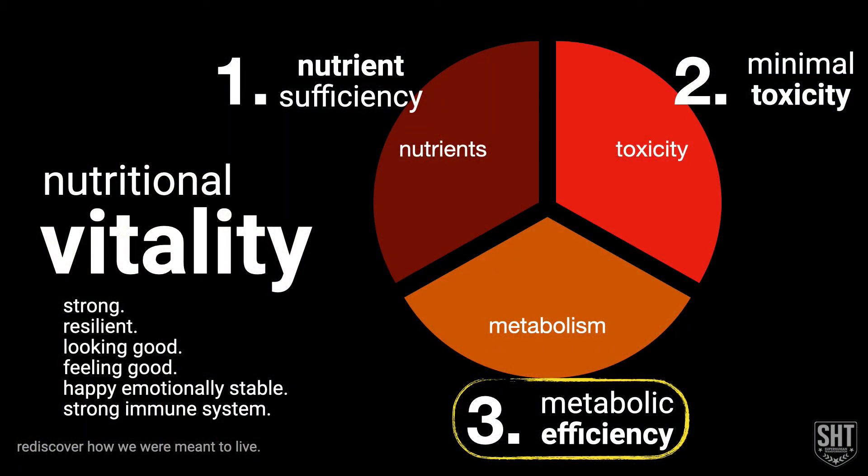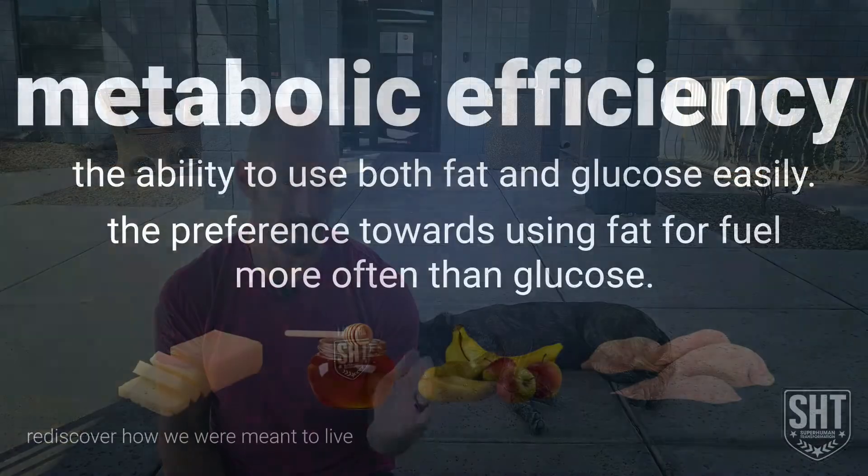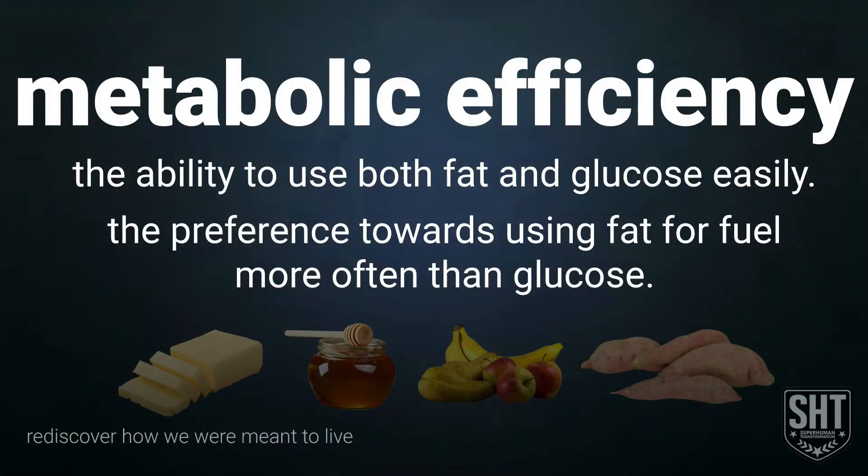Today we talked about metabolic efficiency. To us, metabolic efficiency means the ability for the body to use fat and glucose for fuel easily. Ideally, the body has a preference towards using fat for fuel over glucose, because the body always knows how to use glucose — it's always running through the bloodstream even during fasting. The body needs help learning how to use fat for fuel, and once that happens, we start to have metabolic flexibility.